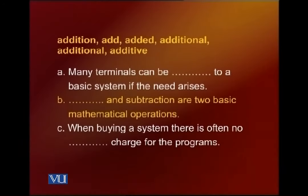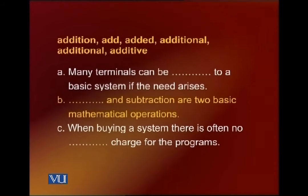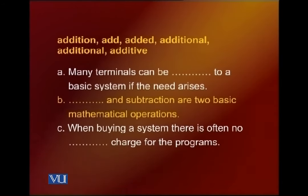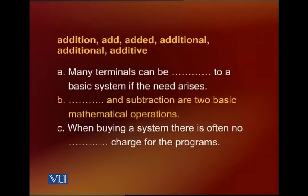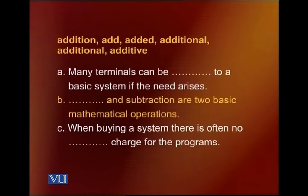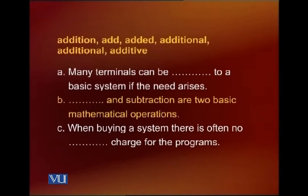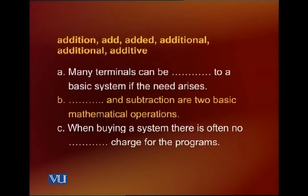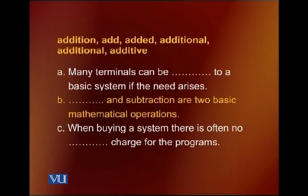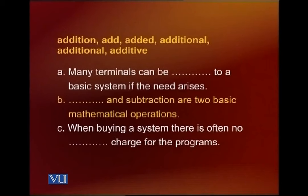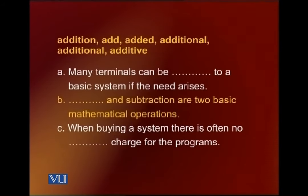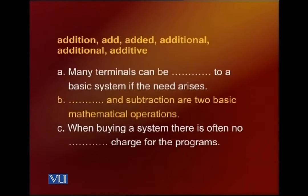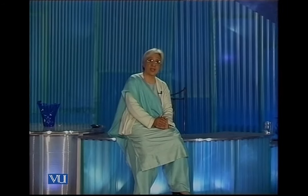Next we have six forms of the word 'add': add, added, addition, additional, additive. Sentence A: many terminals can be ___ to a basic system if the need arises — the correct form is 'added'. Sentence B: ___ and subtraction are two basic mathematical operations — it has to be 'addition'. Sentence C: when buying a system, there is often no ___ charge for the program — the correct form is 'additional'.